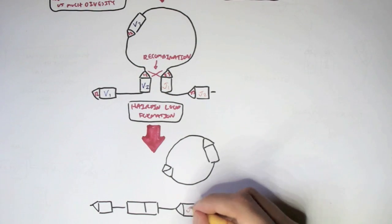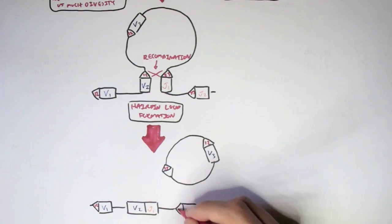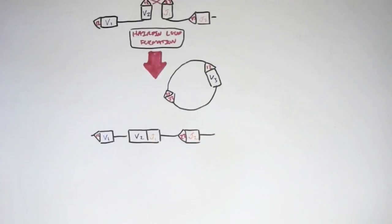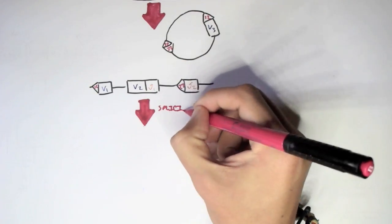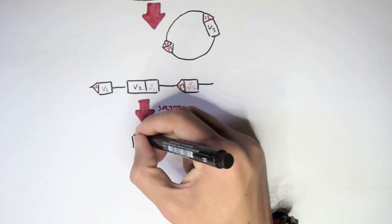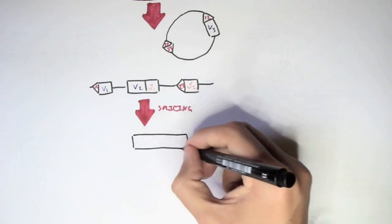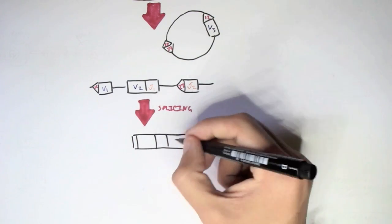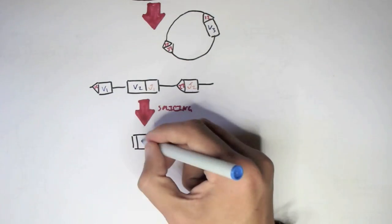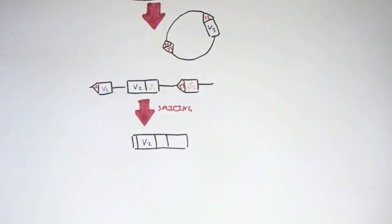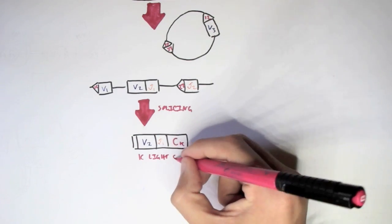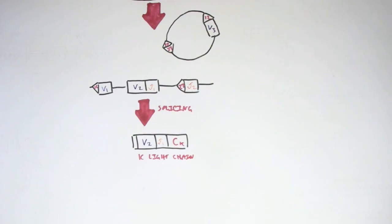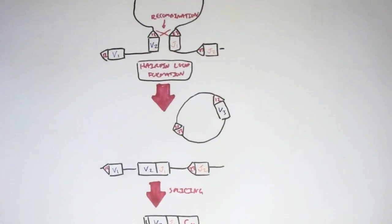Under the 23-12 rule, V1 and V2 cannot bind together (both are 12 bp), V2 and V3 cannot bind, and J1 and J2 cannot bind, but V2 and J1 can. One way recombination is initiated is through hairpin loop formation, where V2 and J1 are placed parallel, allowing the 12 bp and 23 bp spacers with their heptamer and nanomer sequences to undergo recombination, cutting off the RSS sequences and leaving V2 and J1 bound together.